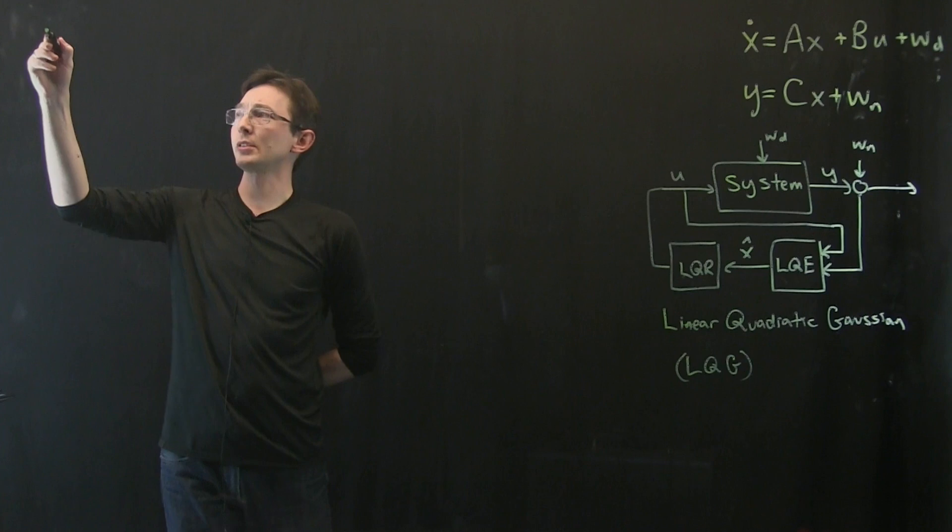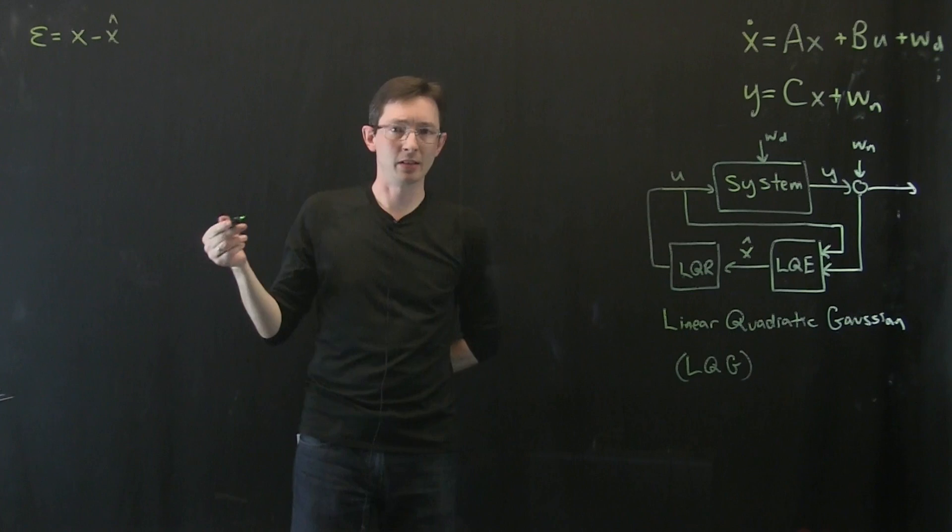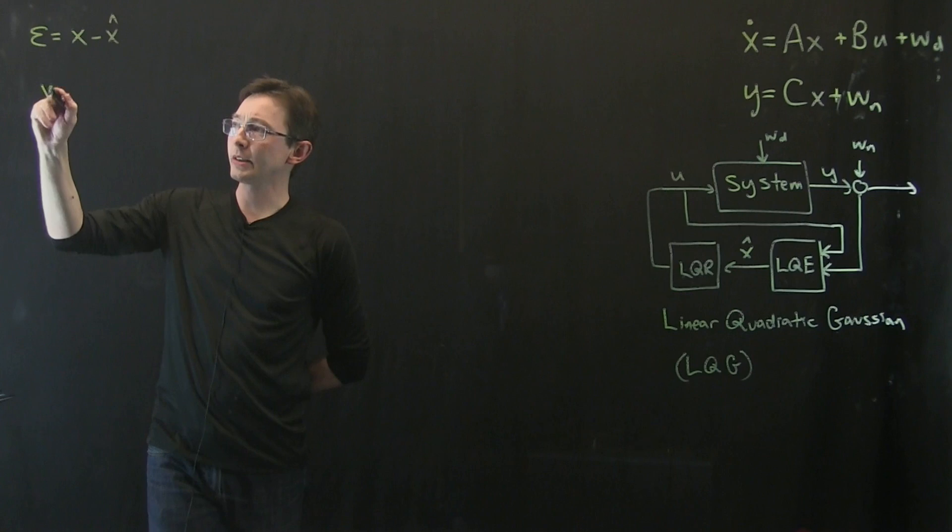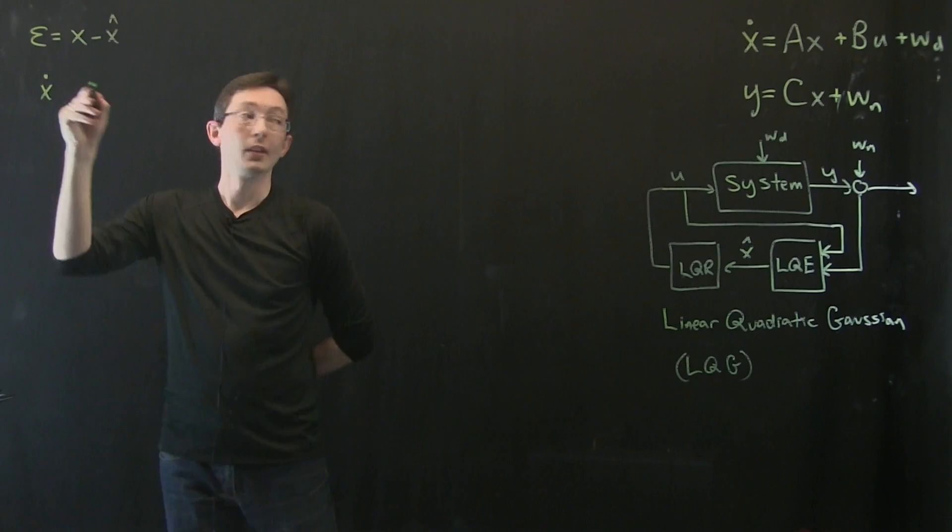So what I want to do is remember, first of all, we have epsilon equals x minus x-hat. And we had some epsilon-dot dynamics that I'll remind you of in a minute. But what I want to check is that x-dot, so d dt of x is equal to all of this stuff.